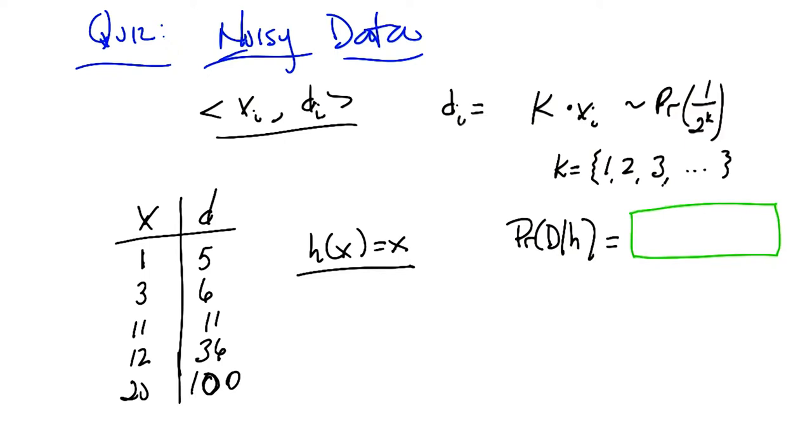So the probability that that would happen from this hypothesis for the very first data item, the 1 to 5, would be 1 32nd. That's the probability that a 1 would produce a 5 by this process.